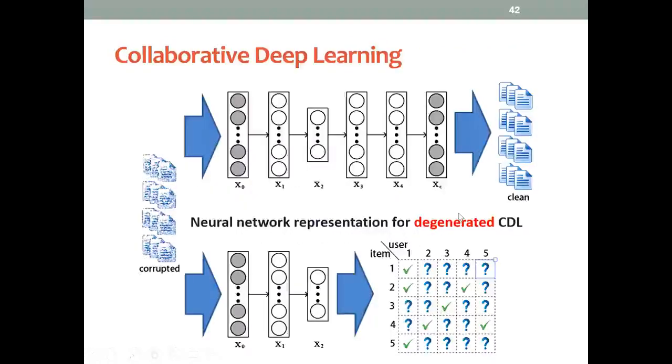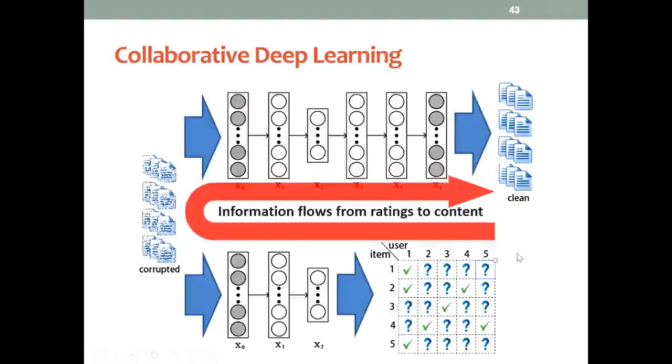Besides graphical models, we can also see this model from a neural network point of view. In particular, if we take this lambda X, the Gaussian distribution variance, to infinity, our model will degenerate into simultaneously learning two neural networks with common input and different output. The information flow will go both ways.